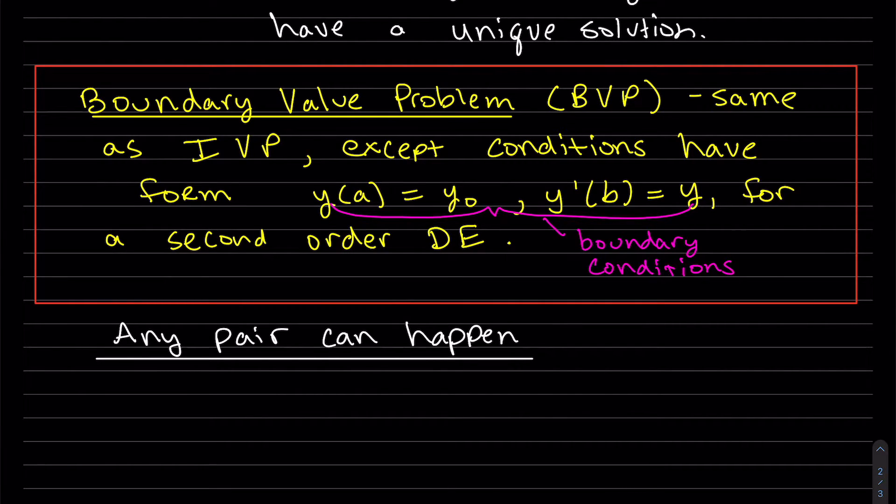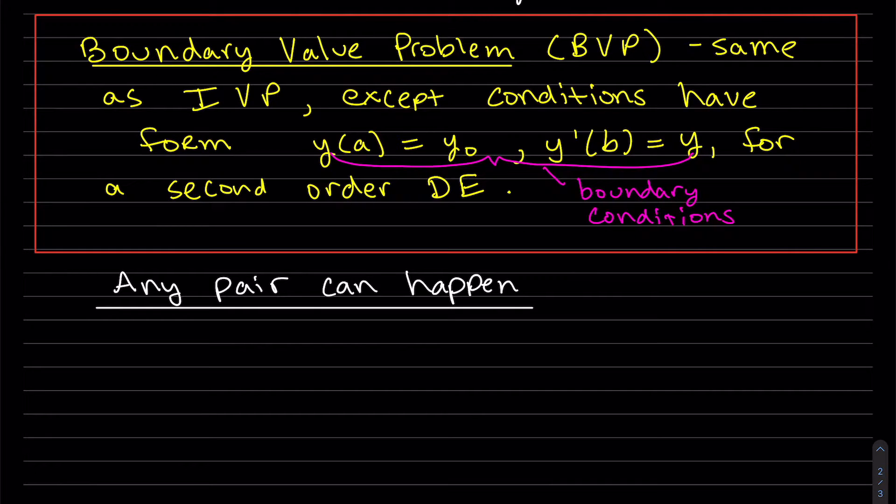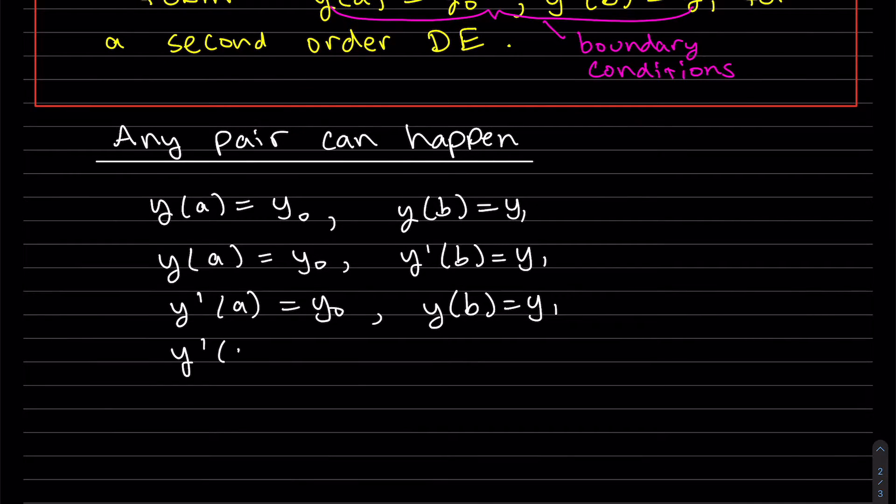Just so we're clear, any of these pairs can happen. It doesn't have to be an initial condition for y and an initial condition for the derivative for my second order DE. It could be two initial conditions from y or two initial conditions from my derivative or a mixture. So here's a list of what can happen for my boundary conditions. So as I mentioned, we can have two initial conditions from y or on the last one, we could have two initial conditions from the derivative or we can have a mixture, one from each.